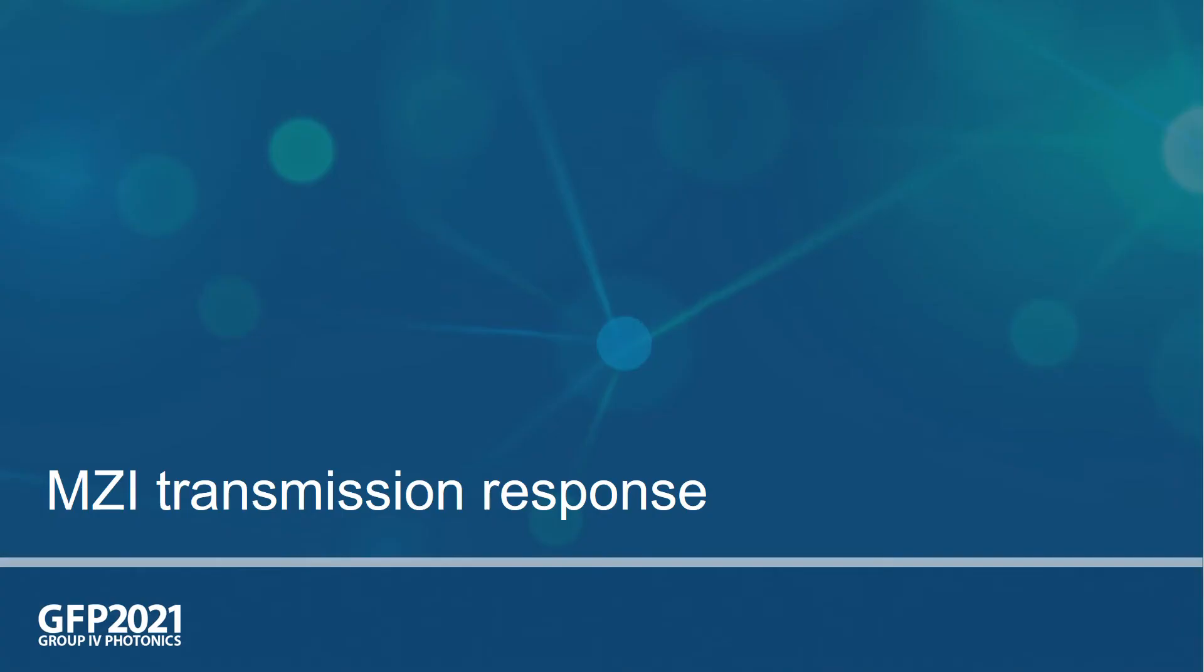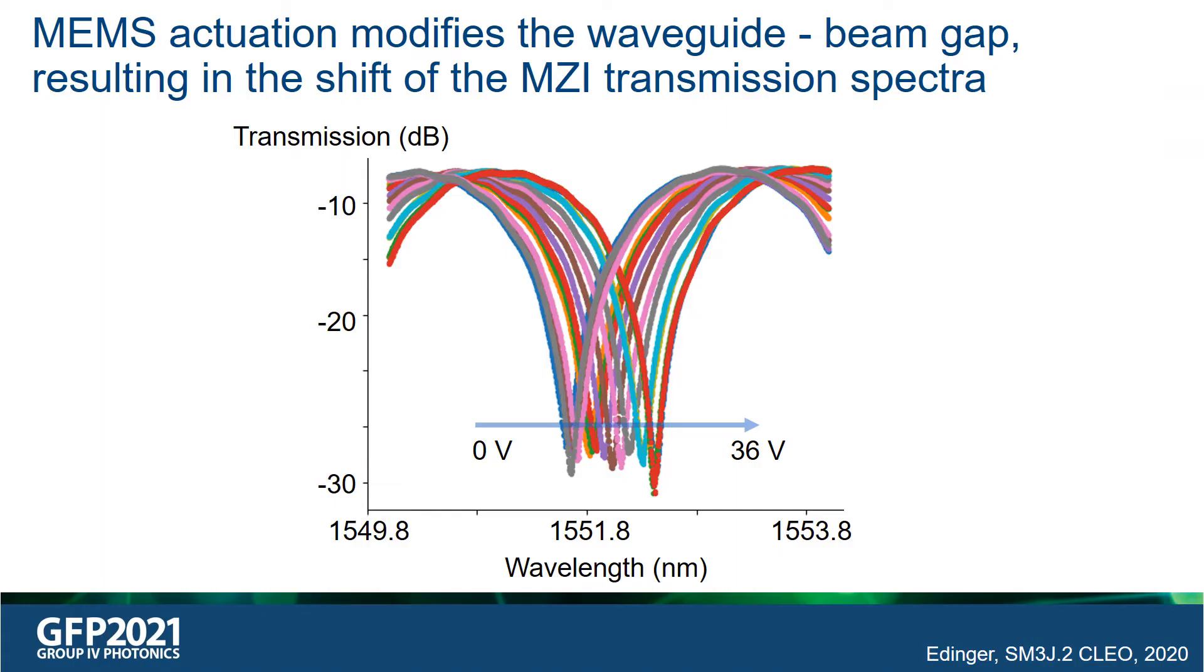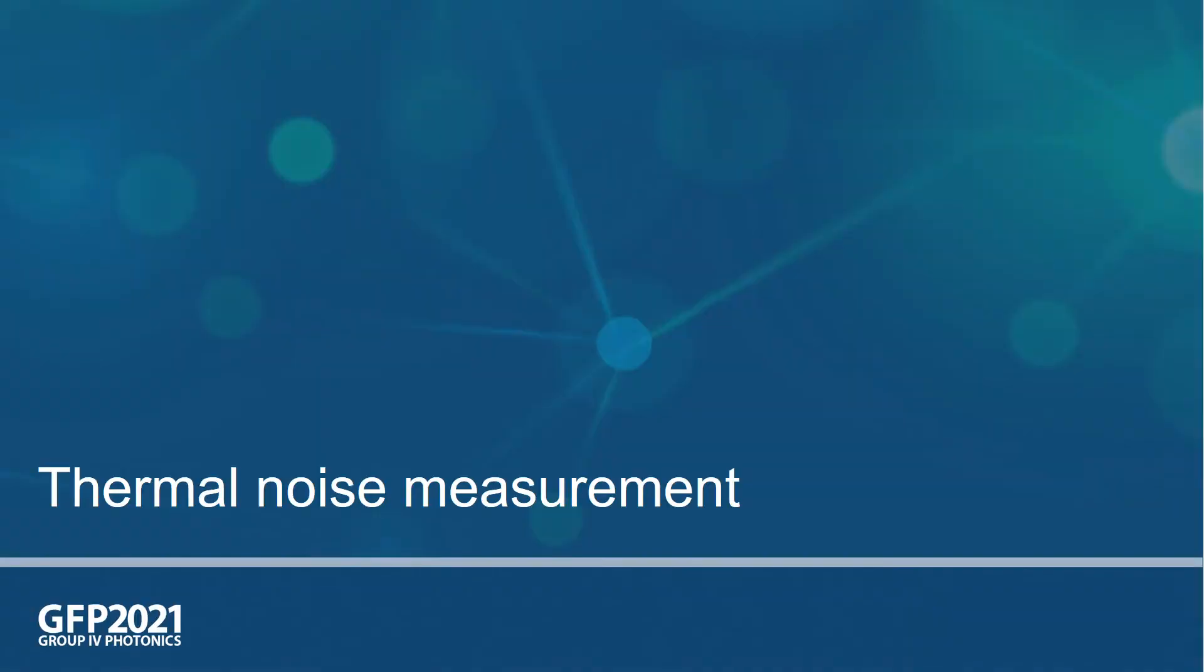We first measure the transmission response of the MZI for different actuation voltages. From the plot, we clearly observe that as we increase the MEMS voltage from 0 to 36 volts, the MZI transmission spectrum shifts. This is because the MEMS actuation increases the waveguide-beam gap. Once the transmission response is known, the thermal noise measurements can be carried out.